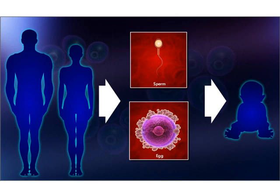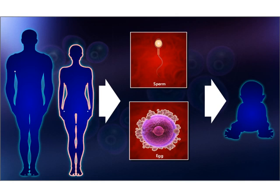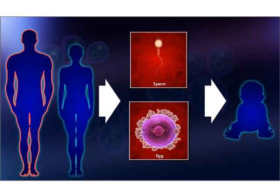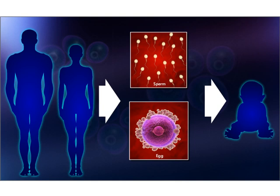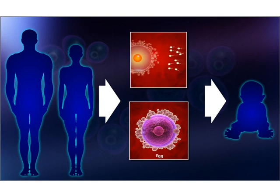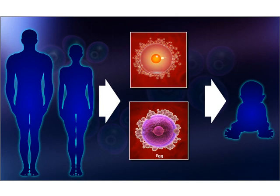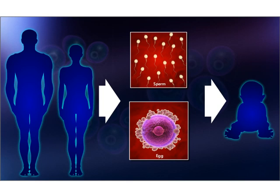These gametes fuse in fertilization to form a zygote, which will grow into a child. The child receives half of its chromosomes from its mother and half from its father. As men and women produce millions of gametes and the selection of gametes in fertilization is random, this contributes to genetic diversity. Hence, a child is not identical to either parent.